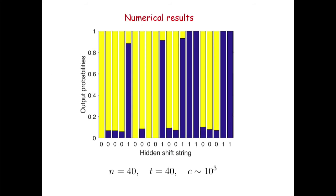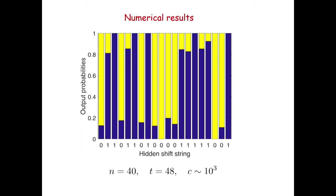These are our numerical results. The horizontal axis shows the actual hidden shift string S and the vertical axis shows probabilities computed by our simulation algorithm. For example, if the actual hidden shift is one, our algorithm assigns it probability roughly 90%. There is good agreement between the algorithm output and the actual hidden shift string. In this example we have 40 qubits, 40 T gates, and about 1,000 Clifford gates. In a similar simulation with about 50 T gates the precision is slightly worse, but there is still a very strong correlation between algorithm output and the actual hidden shift string.